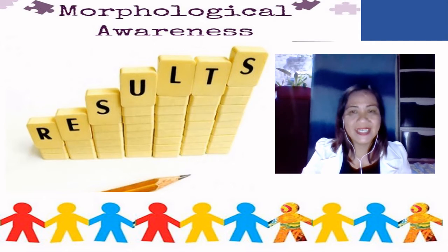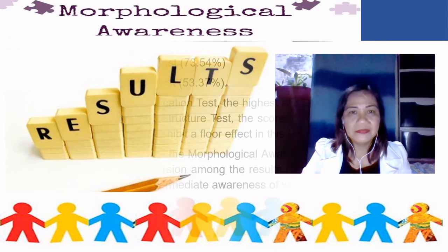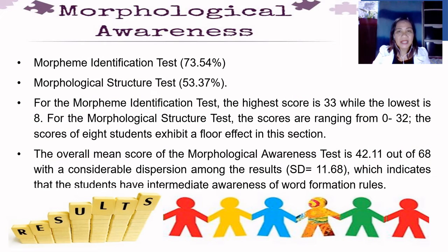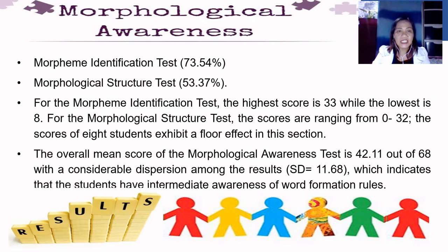For the results of this study, the students scored better in the morpheme identification test at 73.54% than in the morphological structure test at 53.37%. For the morpheme identification test, the highest score is 33 while the lowest is 8; for the morphological structure test, the scores range from 0 to 32. The scores of 8 students exhibit a floor effect in this section. The overall mean score of the morphological awareness test is 42.11 out of 68, with a considerable dispersion among results (SD = 11.68), indicating that the students have intermediate awareness of word formation rules.